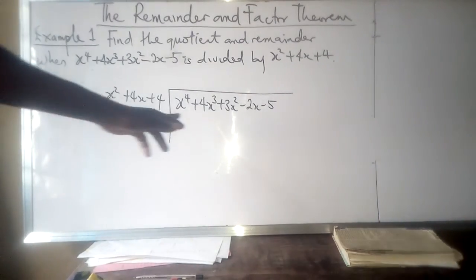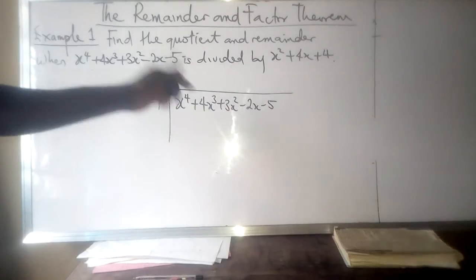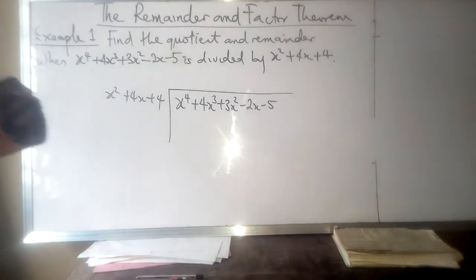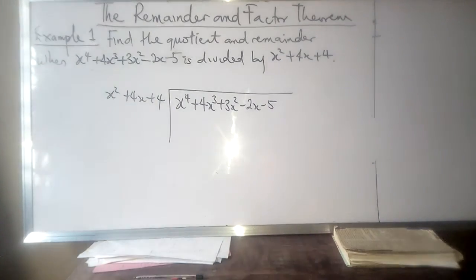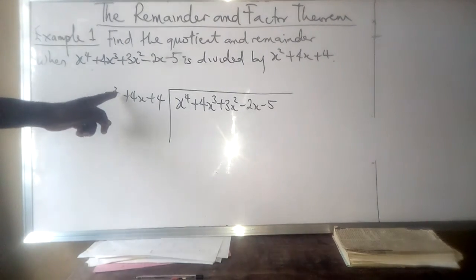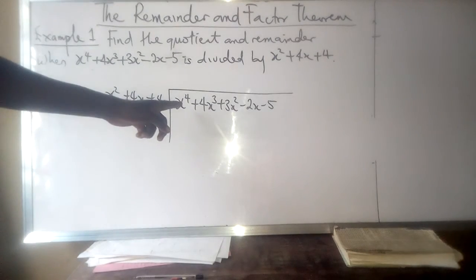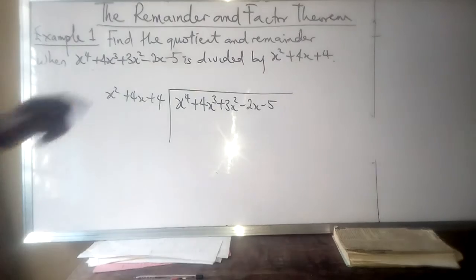In the given polynomial function, the degree is 4—that's the highest power of the unknown in the expression. The divisor has 2 as the highest degree. So what do we do? We divide x⁴ by x².